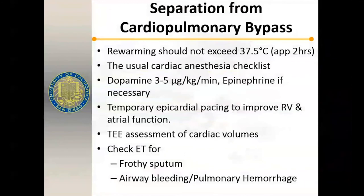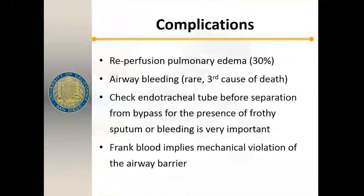When separating from bypass, you must re-warm to normothermia — typically taking up to two hours (warming takes much longer than cooling). Go through your checklists: start dopamine infusion, sometimes epinephrine, use temporary pacing wires and pace the patient around 80 beats per minute to help the right ventricle. Check the endotracheal tube for any evidence of bleeding. If there's frothy sputum or airway bleeding, you have a problem to deal with.